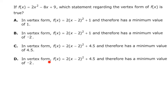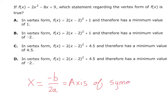The first thing I'd like to do is find the vertex. Do you remember what the x value of the vertex is — the formula for it? Negative b over 2a — that's the x value of your vertex, which is also your axis of symmetry.